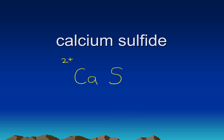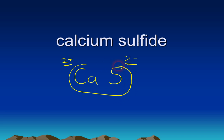Step five says if the absolute values of the charges are equal, you are finished. We have a positive two and a negative two — those absolute values are the same, so they cancel each other out and we are done. The formula for calcium sulfide is just CaS.